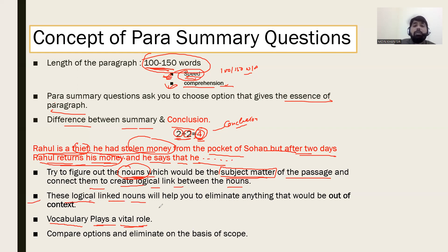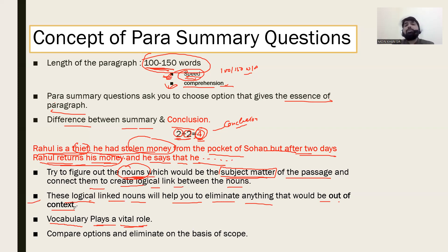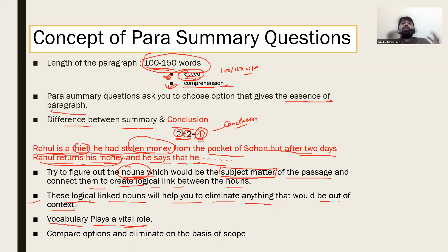These logically linked nouns will help you eliminate anything that is out of context. For example, if we are looking at a marriage proposal and discussing the boy's and girl's character and their family — we would not look at the neighbor's family's character. That would be illogical. The discussion will only be about the specific individuals' characteristics, features, and goodwill. Other things would be out of context.